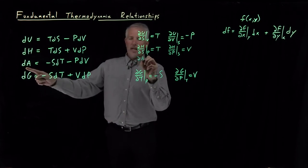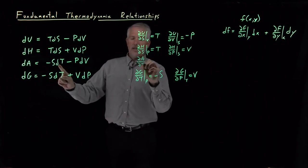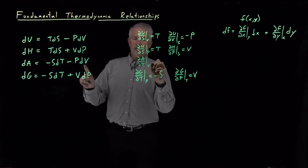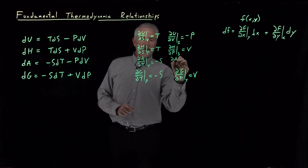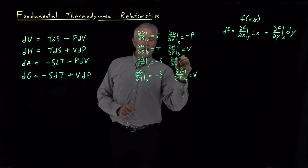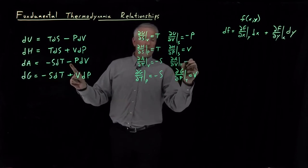Helmholtz free energy, dA/dT at constant V is equal to negative s. And dA/dV at constant T is equal to negative pressure.